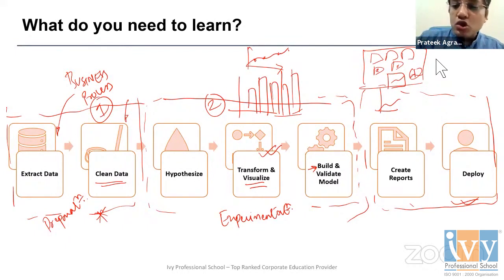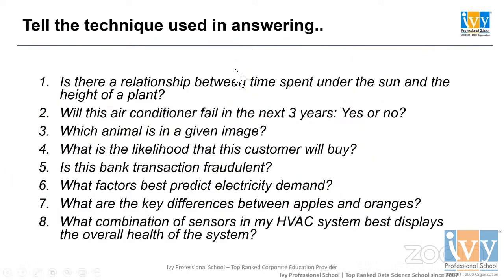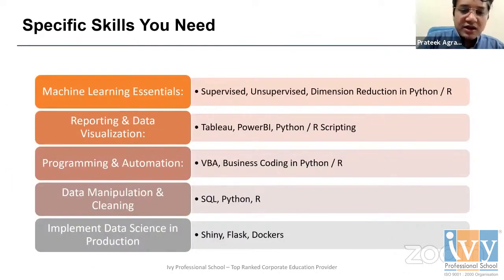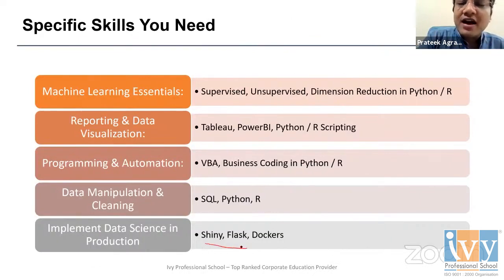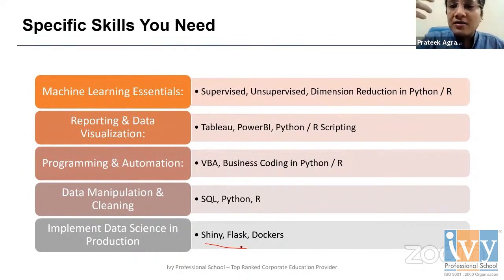On tools used for deployment: Shiny, Flask, Docker, Django are the main tools that help deploy machine learning algorithms on cloud-based web apps or mobile apps — and it's not very difficult to learn.